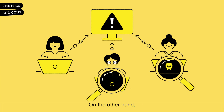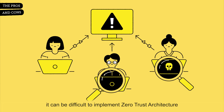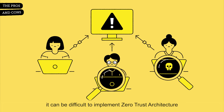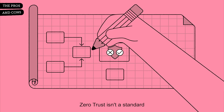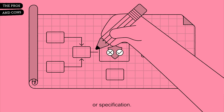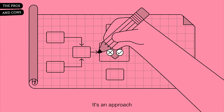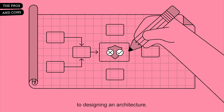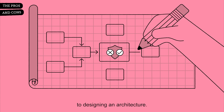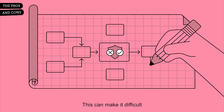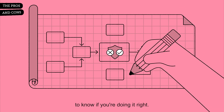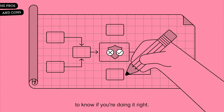On the other hand, it can be difficult to implement Zero Trust Architecture. Zero Trust isn't a standard or specification — it's an approach to designing an architecture. This can make it difficult to know if you're doing it right.